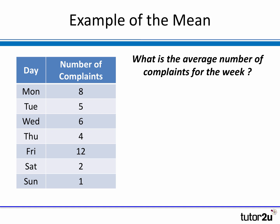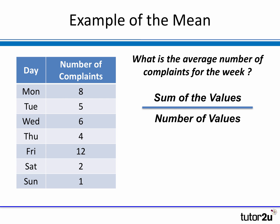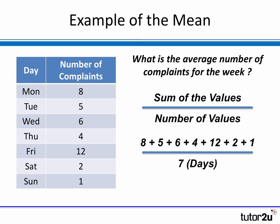The question is: what is the average number of complaints for the week? What we do is sum up all the values and then divide by the number of values or observations. So adding up 8 plus 5 plus 6 plus 4 plus 12 plus 2 plus 1, and then divide by 7 — the 7 days of the week. My math suggests that's 38 complaints over the week divided by 7, which is 5.4 complaints per day.